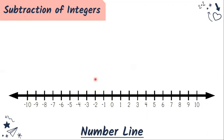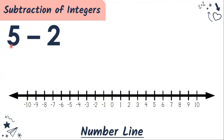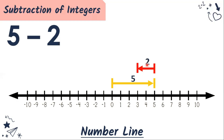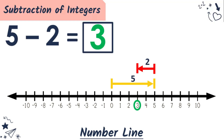How are we going to subtract integers using a number line? Example: 5 minus 2. The sign of our first number is positive, therefore we're going to use a yellow arrow. Let's start at zero — five units to your right. Then for minus 2, we use a red arrow — two units to your left. That gives us three. Five minus two equals three. That is the basic subtraction of integers.